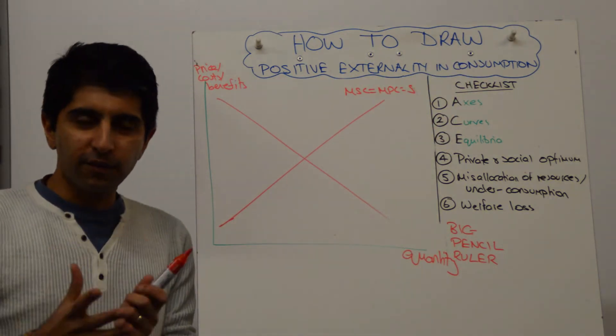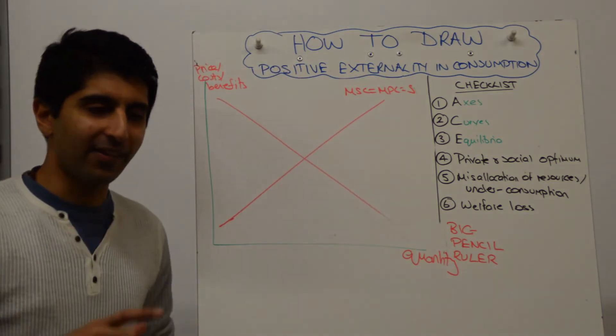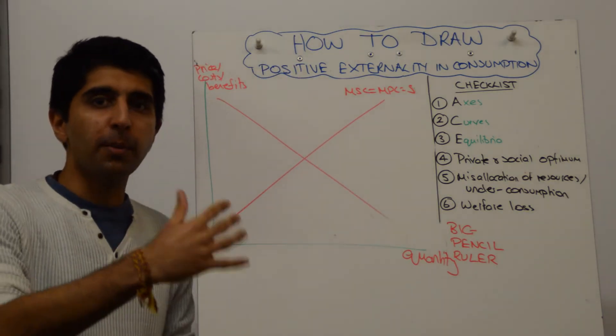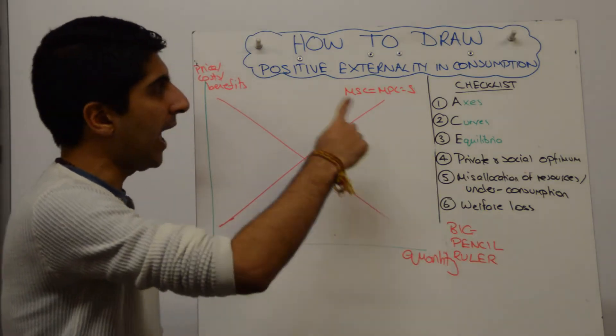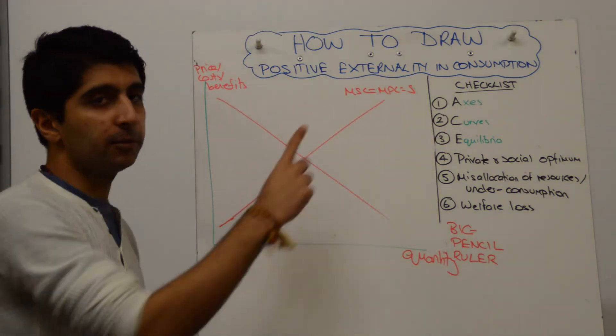So it's a benefits curve we've got issues with. And there is a positive externality here. That means that the social benefits curve is to the right. Any time you see positive externality, the social curve is to the right of the private one here in consumption.